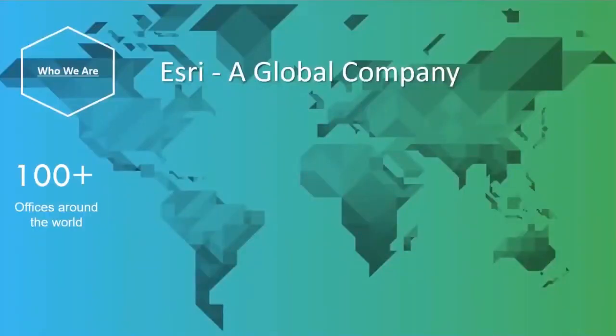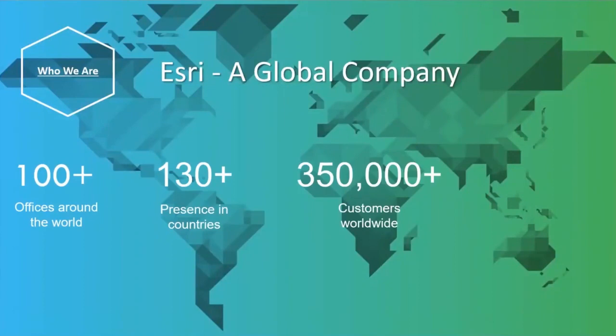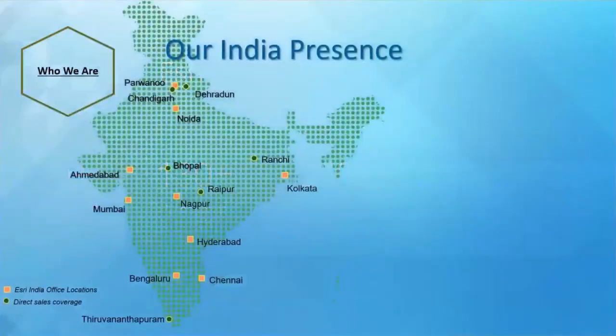Esri, as a global company, has 100 offices around the world with presence in 130 countries and more than 250,000 customers worldwide, including 2,000-plus partners. Talking about our presence in India, we are headquartered in Noida with various regional offices across India in Bangalore, Hyderabad, Mumbai, Chandigarh, Kolkata, and Chennai.